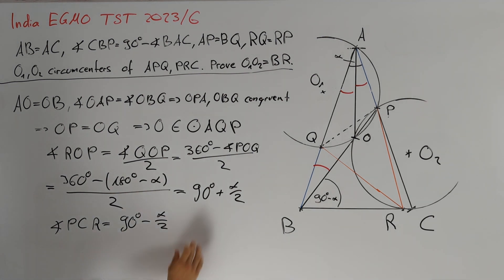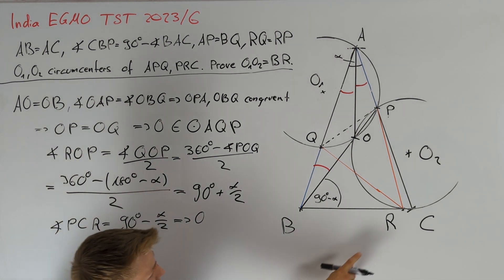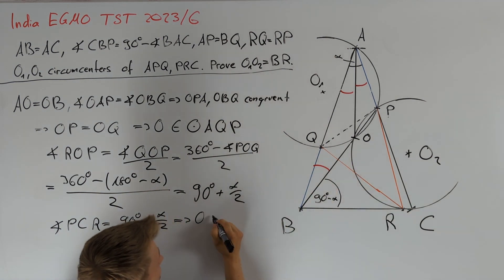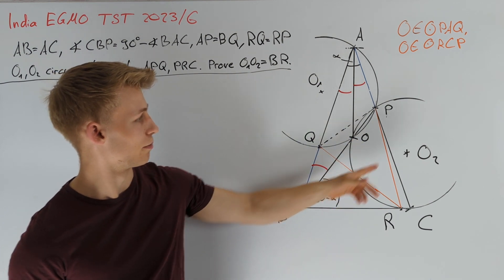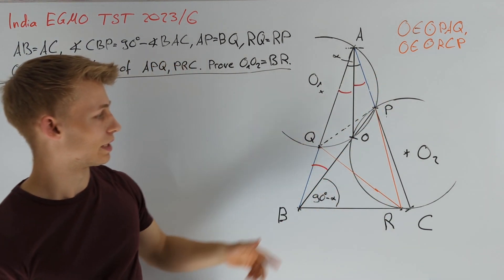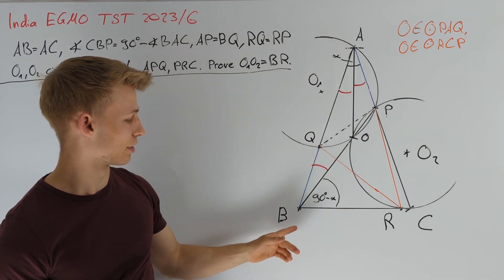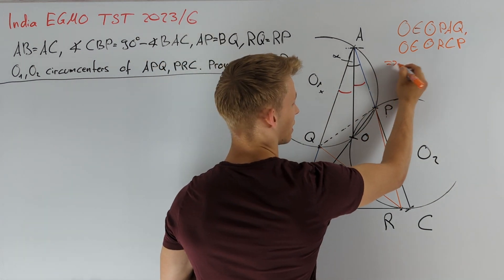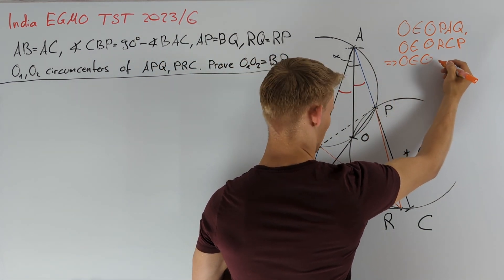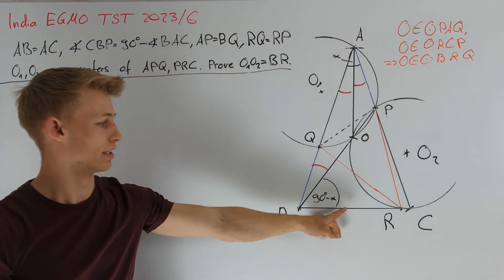Since these two angles sum to 180 degrees, we conclude that O also lies on the circumcircle of triangle RCP. Looking at the picture, since O lies on both circles, we directly get that O also lies on the circle through B, R, Q. Let's write this down and draw this circle into the picture.